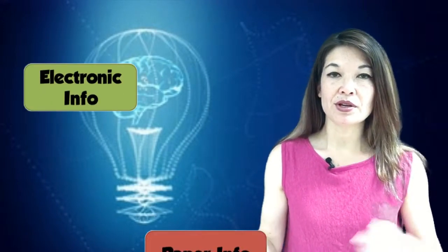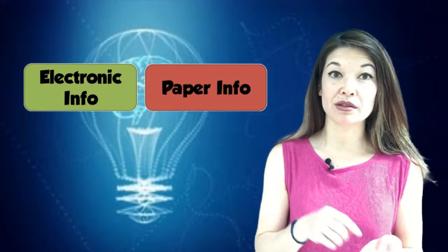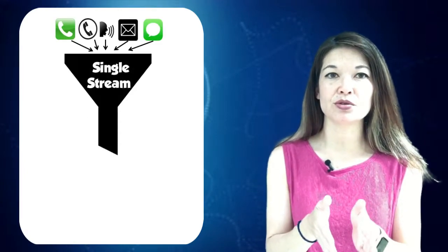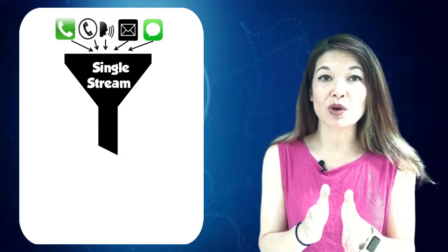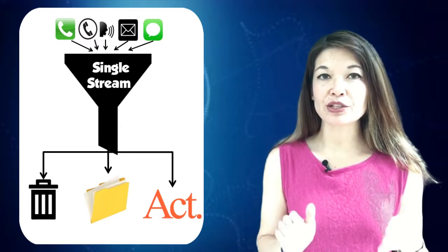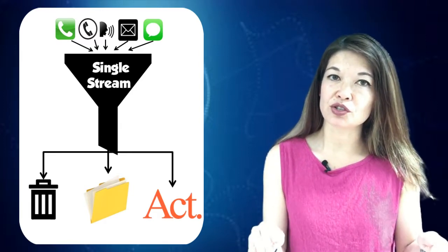This has been an interesting mental exercise to reverse engineer my organizational processes. At its most basic, information comes into my life in two ways: either electronically or by paper. This video covers how I deal with electronic information, which is by far the biggest stream. I attempt to get all electronic information to enter my life through a single stream, then I determine whether to delete it, file it, or act on it. If it falls into the act on it category, then there is another decision point.